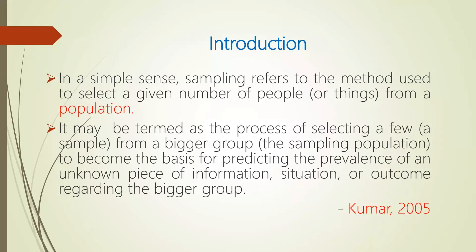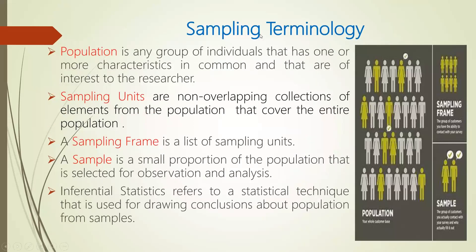Sampling may be termed as the process of selecting a few from a bigger group. It is not always possible to study the whole group or the whole population, so you have to select a small part of the population which will actually predict exactly the same piece of information. Whatever outcome you get from that small sample, you can consider it as the outcome for the bigger population too. These are some sampling terminologies.